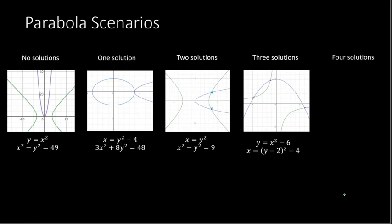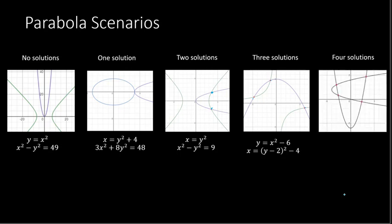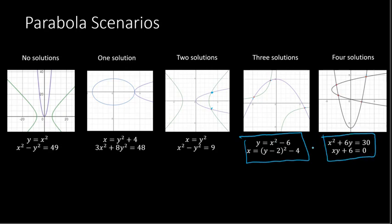For four solutions, you could have two parabolas intersecting at four different spots. By the way, I should note that the equations shown were switched by accident — the equations for four solutions go with that graph, and the equations for three solutions go with that one. Either way, you can graph them yourself and figure those out. We're just showing the different scenarios you could come across.